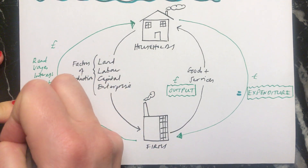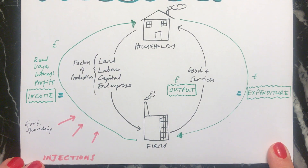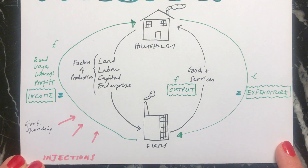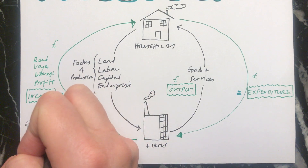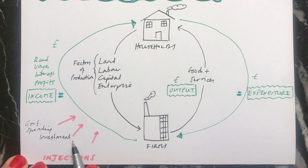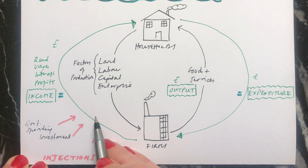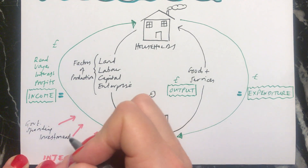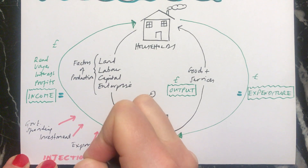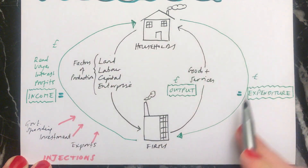The three injections are: first, government spending — when the government spends money in the economy, money comes in, so government spending is an injection. Second, firms can invest; in economics, investment is spending on capital, so if firms spend money on capital machinery that will be counted as an injection. Third, exports — if your economy exports something to another country, they give you money for that export and money comes into the circular flow.